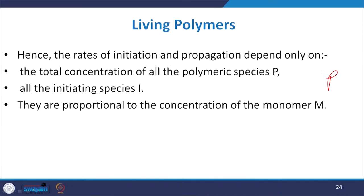The most common polymerizations yielding living polymers involve irreversible initiation and propagation, with the rate of both being proportional to the monomer concentration. The various species involved in living polymerization sometimes coexist in rapid equilibrium with each other, so the rates of initiation and propagation depend only on the total concentration of all polymer species P and all initiating species I, and they are proportional to the concentration of the monomer M.